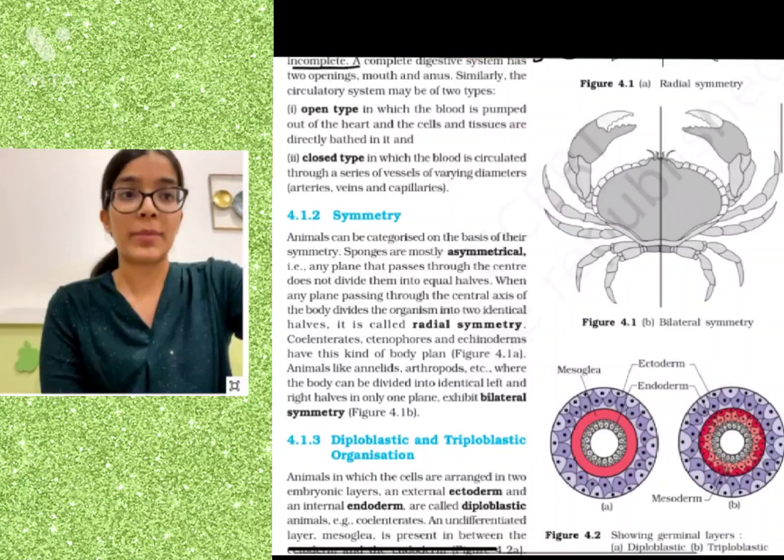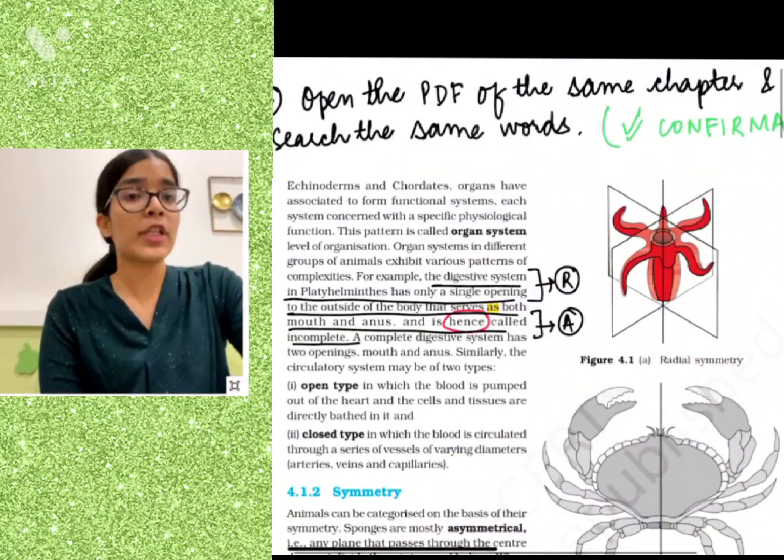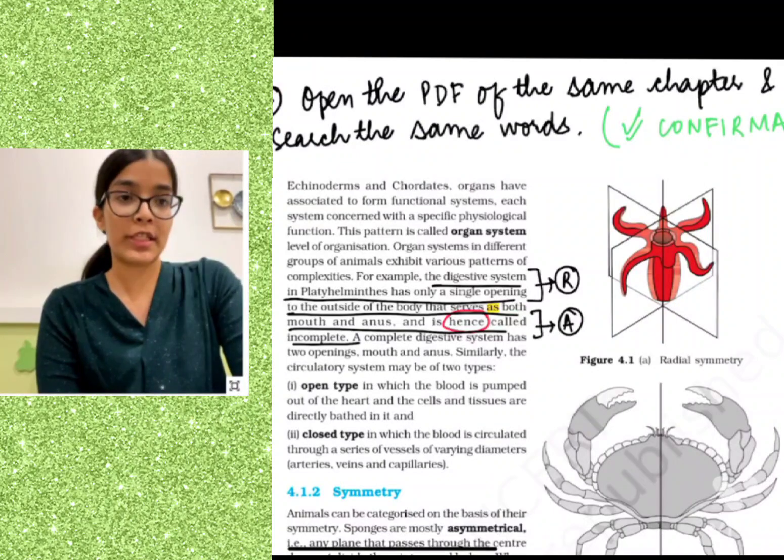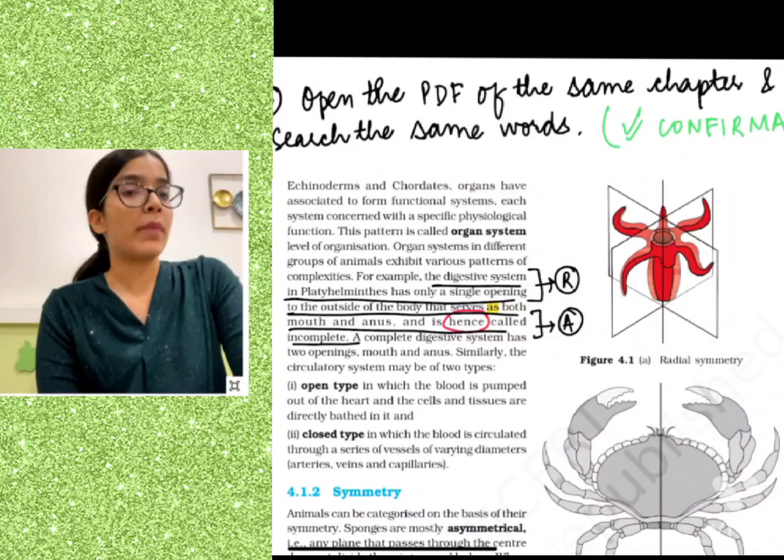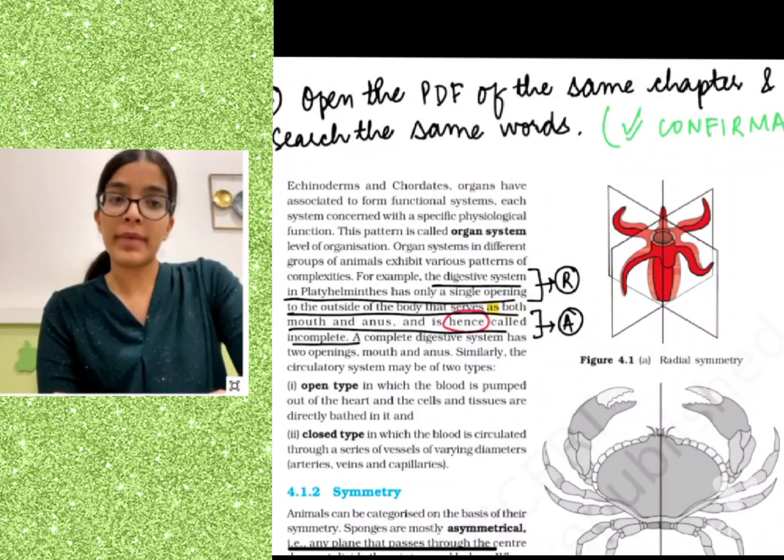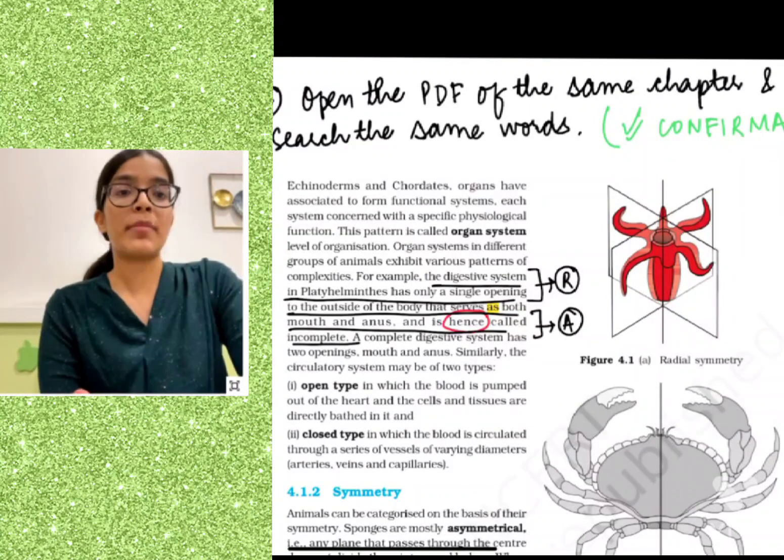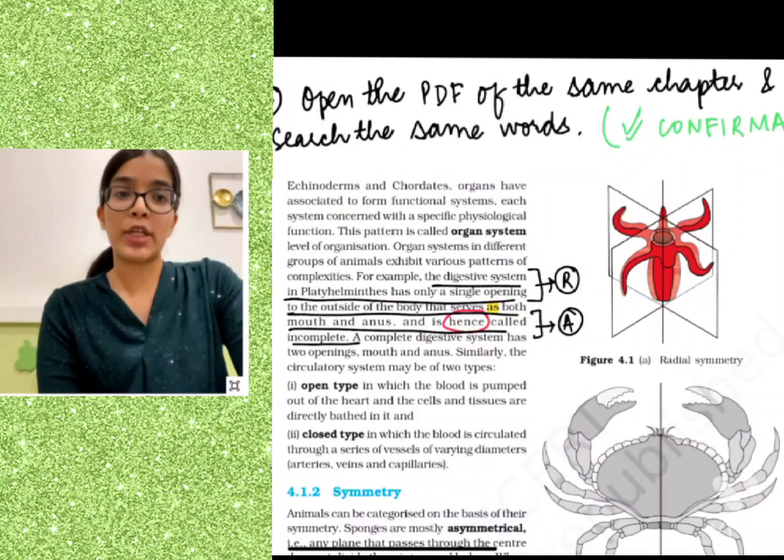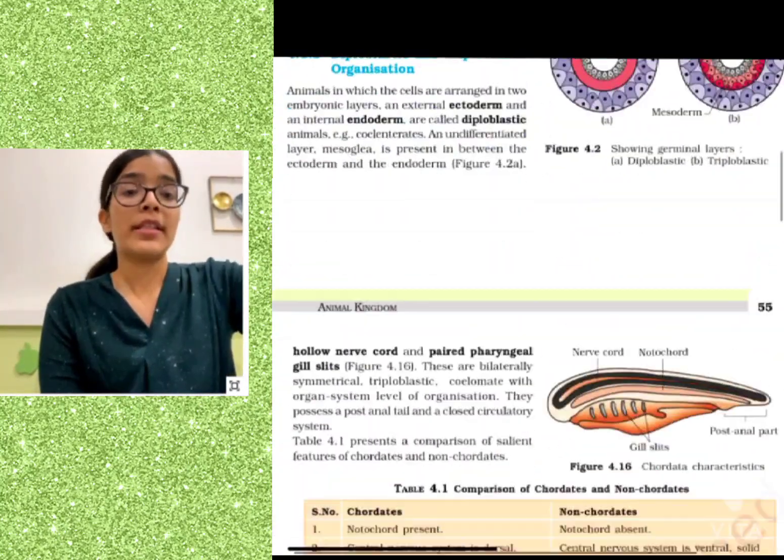We're going to go through some questions from the chapter Animal Kingdom. The first one is that the digestive system in Platyhelminthes has only a single opening to the outside of the body that serves as both mouth and anus, and is hence called incomplete. Our keyword here is 'hence,' and the assertion is that Platyhelminthes has an incomplete digestive system. The reason is that it has only a single opening to the outside of the body.